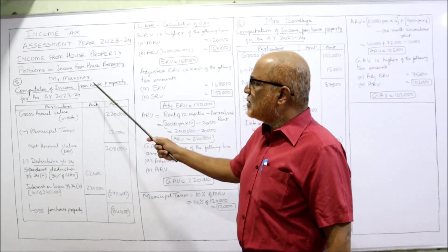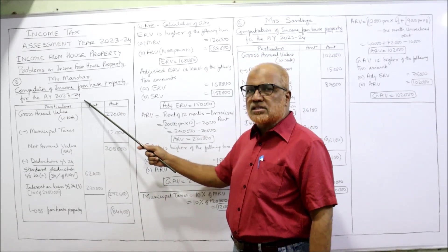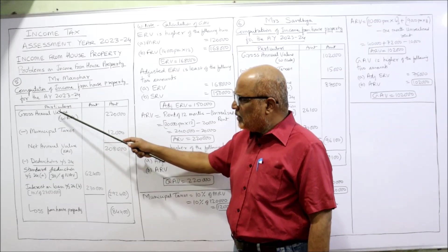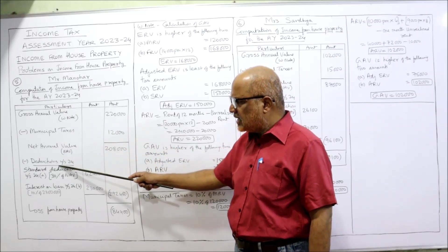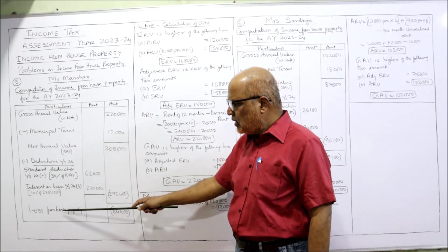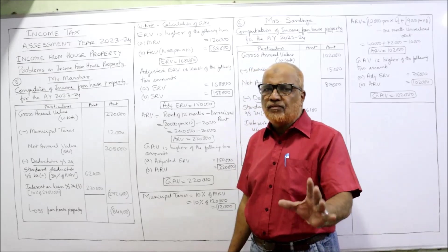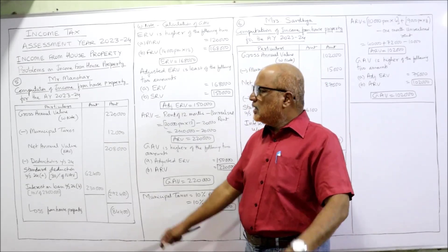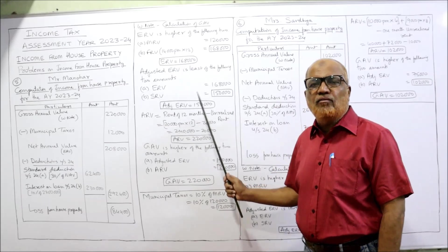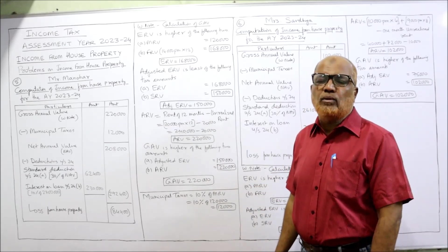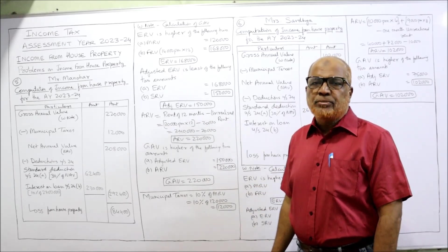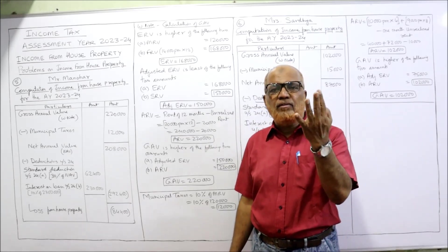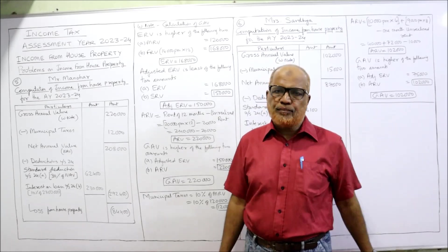Now, computation of income from house property for Mr. Manohar for assessment year 2023-24. The format is: GAV minus municipal taxes equals NAV, less reductions under Section 24, equals income from house property. This same format will be applied in every problem. GAV will be calculated in working notes by considering MRV, FRV, ARV, and SRV.